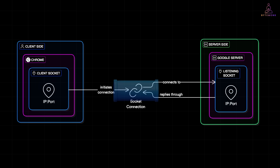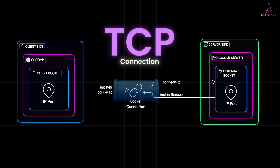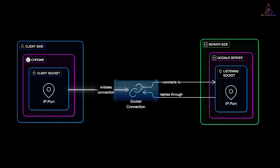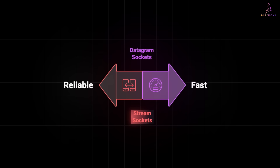A socket is like a pipe between the server and the client. It stays open for the entire communication. When a client like your browser talks to the server, it establishes a TCP connection through a socket. A connection is a socket in this context — you can think of them interchangeably here. A request is what travels inside the connection. It could be an HTTP GET request to load a web page, an HTTP POST request to submit a form, or a WebSocket message.